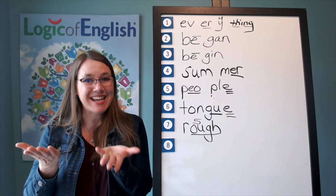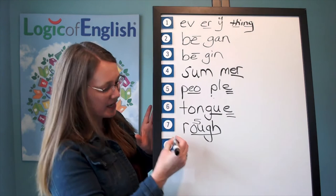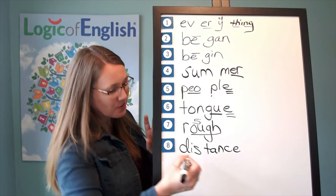Silent final E. You're right. Dis-tance. Go ahead and write it. Good. Dis-tance. And now help me to write it. The first syllable is dis, D-I-S. The second syllable is tance, T-a-n-s. Silent final E.